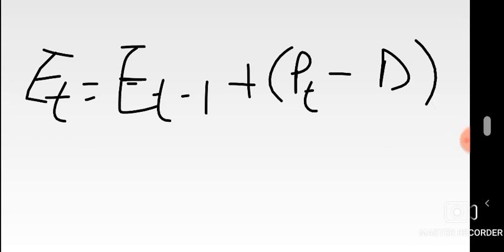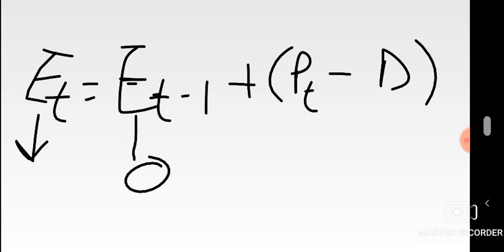The formula on screen helps us determine ending inventory in any given period. We're looking for Et — the ending inventory. Et-minus-1 stands for the previous month's ending inventory. The question stated that July had nothing in inventory, so Et-minus-1 is zero. Inside the brackets, P is the production in the current period — two million. Then we subtract D, the demand for the month we're planning for.